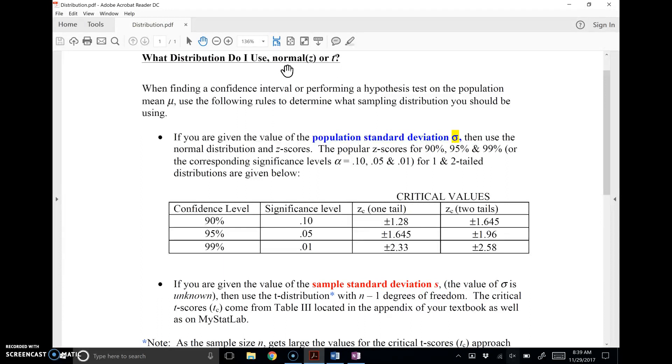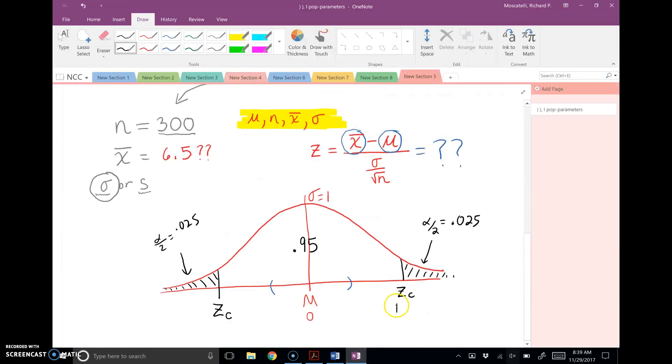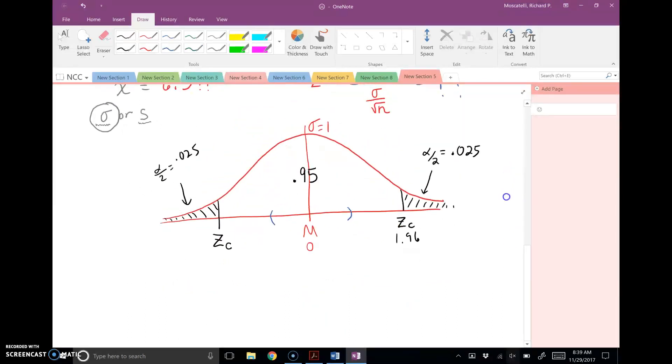So if you look over here for 95% confidence, 2 tails, positive and negative 1.96. So remember what those do. So this is 1.96 and negative 1.96. These are z-scores that cut areas under the bell curve.